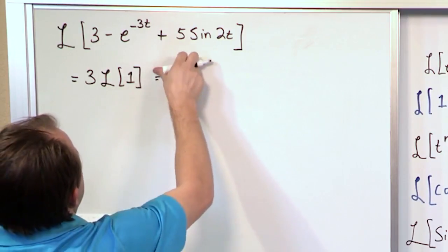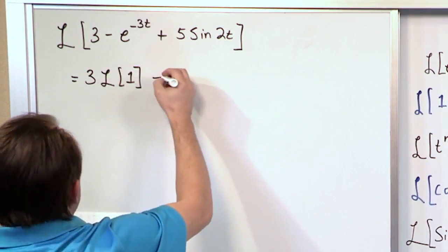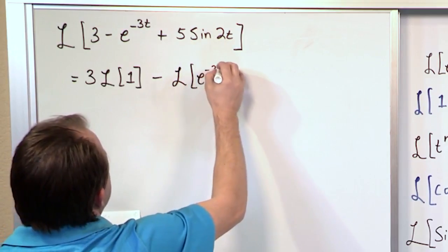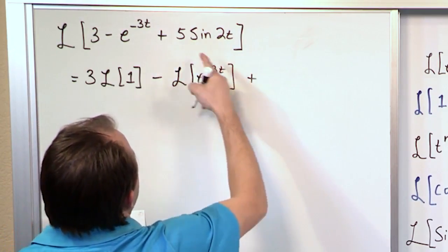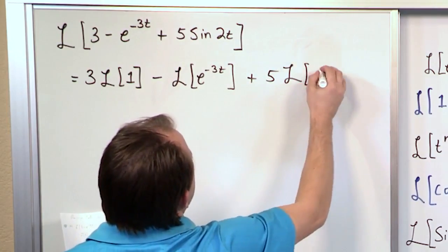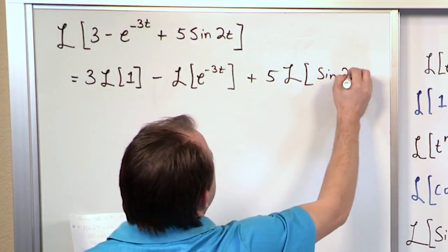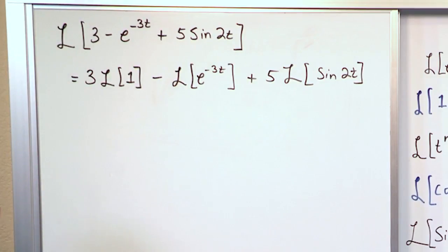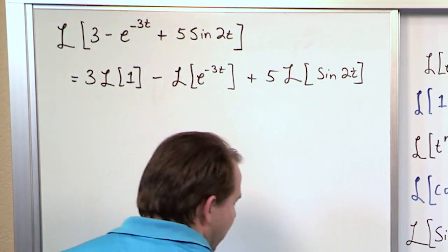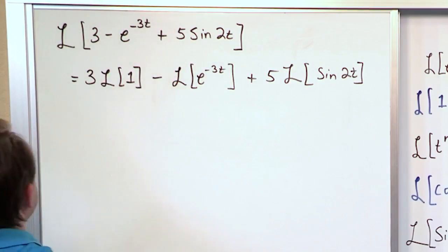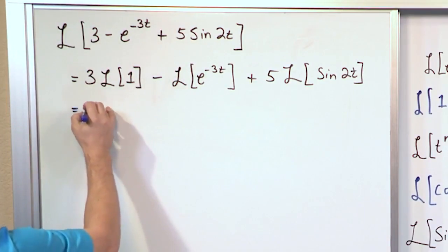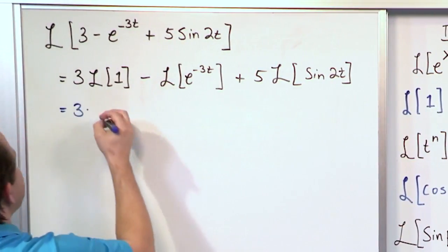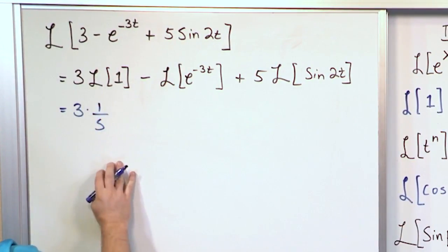This will be a minus sign and then you'll have Laplace Transform of e to the minus 3t, and then this will be 5 times the Laplace Transform of sine 2t. So that's basically what we're doing and this helps us keep track of what we're actually transforming. Well this one here is 3 times the Laplace Transform of 1, which we've looked at many times as just 1 over s.